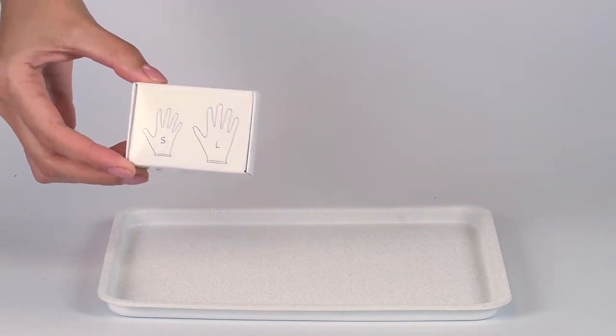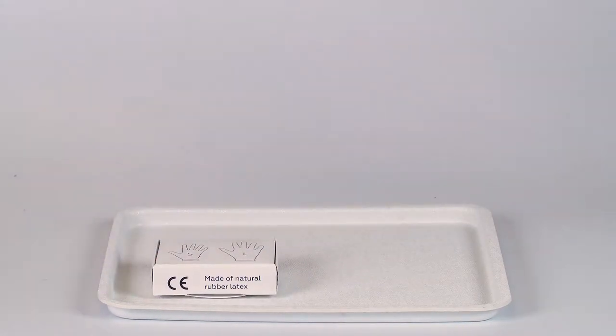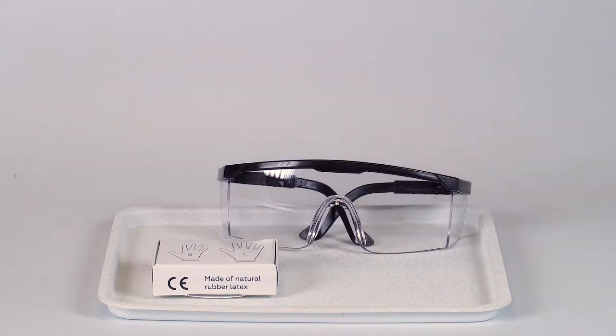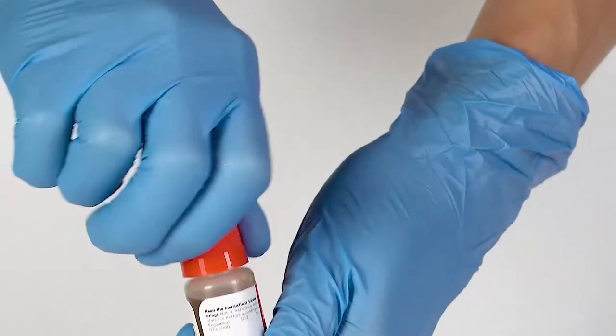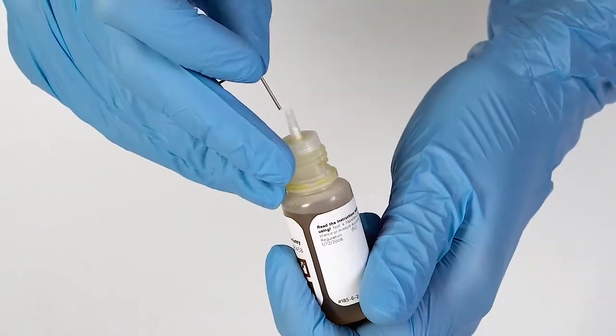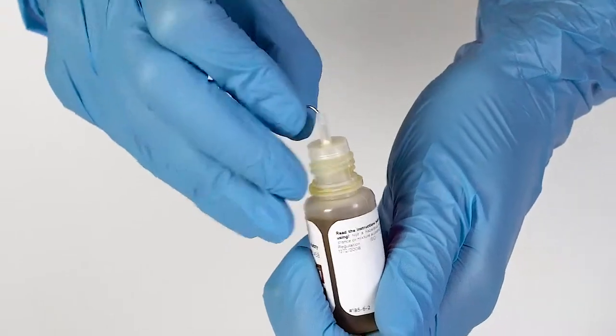Perform this experiment on a plastic tray to contain any possible spills. Do not forget to put on protective gloves and goggles before doing the experiment. To open a bottle containing a reagent, push the cap down and turn it. Pierce the bottle nozzle with an unbent paper clip.